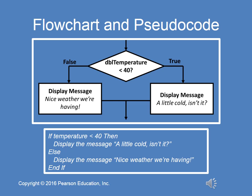Here's a flowchart showing if-then-else and the associated pseudocode for a two-way branch. If dblTemperature < 40 — if that expression is true, meaning the value stored in dblTemperature is less than 40, we'll display 'A little cold, isn't it?' If that is false, meaning dblTemperature is greater than 40, we'll display the message 'Nice weather we're having.'